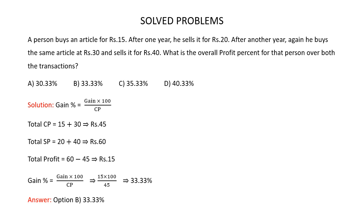You are asked to find the overall profit percent. Gain percent equals gain multiplied by 100 divided by cost price. The total cost price is 15 plus 30, which is Rs 45. The person sells the article for Rs 20 and then for Rs 40, so the total selling price is 20 plus 40, which is Rs 60.